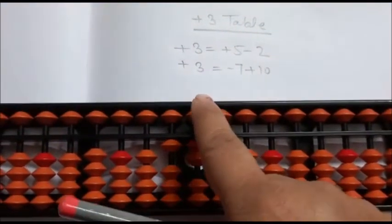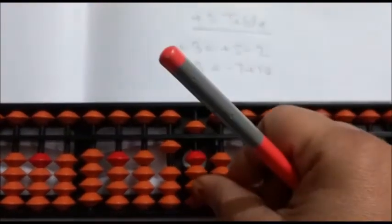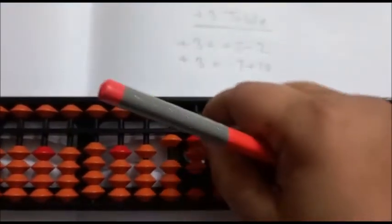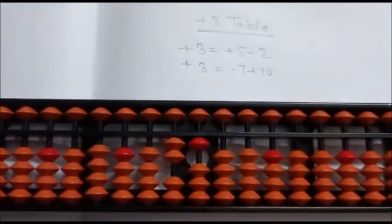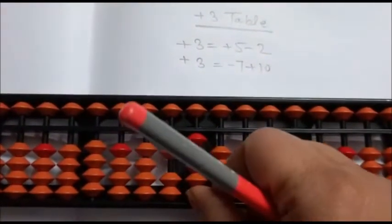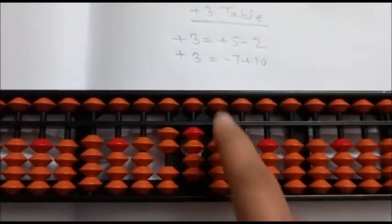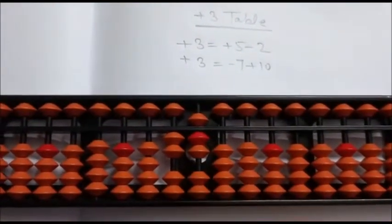Again, plus 3: plus 5 minus 2. Again, plus 3 is direct. Again, plus 3: minus 7 plus 10. Again, plus 3 is direct. Again, plus 3: plus 5 minus 2.